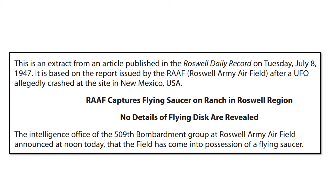Now we can do the exact same thing for the second text. This is an extract from an article published in the Roswell Daily Record on Tuesday, July 8, 1947. It is based on the report issued by the RAAF, Roswell Army Airfield, after a UFO allegedly crashed at the site in New Mexico, USA. From this we already have our mode — it's a newspaper article — and we can take this information to determine the audience. With it being from the Roswell Daily Record, we can assume it has a fairly small primary audience, which is going to be the residents of Roswell who are interested in local news. This is quite different to if you were given a newspaper article from, say, the Daily Mail or the Guardian, where you'd be expecting a national and perhaps international audience.